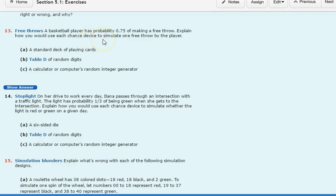A basketball player has a probability 0.75 of making a free throw. Explain how you would use each chance device to simulate one free throw by the player. So how could you use a standard deck of playing cards, table D of random digits, or a calculator or computer's random integer generator?